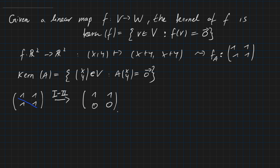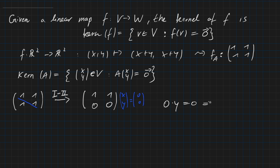We start reading the solution from the last row, thinking of x and y and the zeros since we are interested in x and y such that the matrix maps them to zero. The last row gives us 0 times y equals 0, which means y can be any real number.